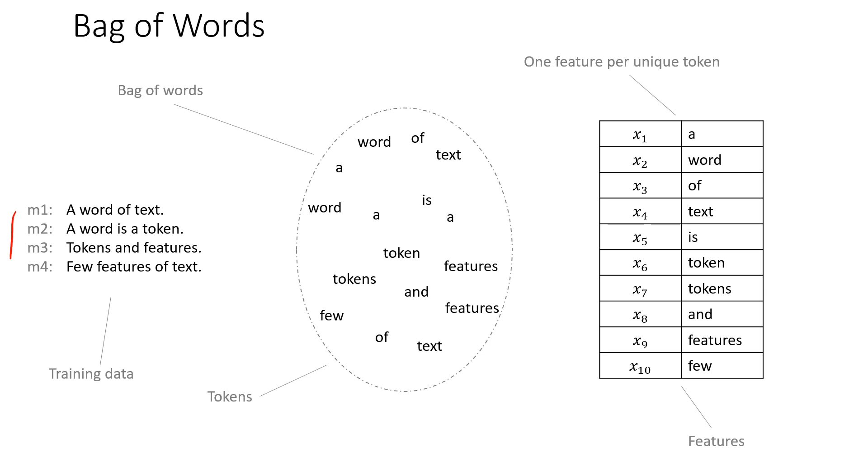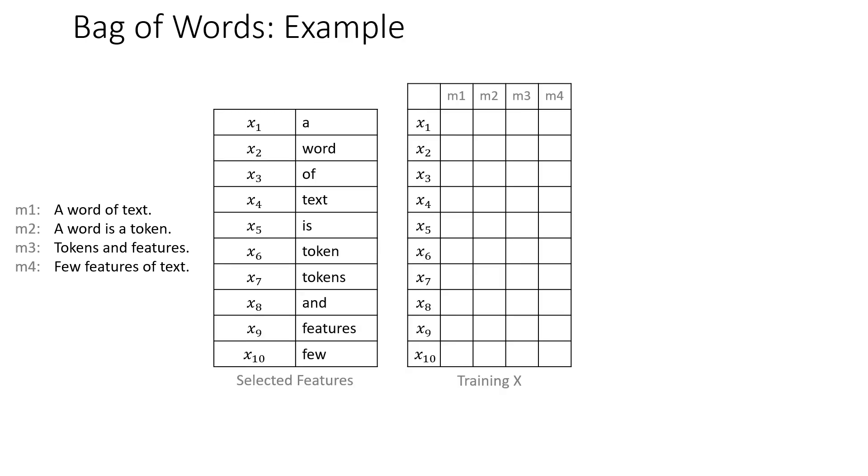So now what do you do with this? So you have the original training data that we started with, you have the features that we selected using the bag of words technique. And then we want to produce the training vector. And as I said, you just fill in the ones and zeros. So each message has a one for each word that it has. There you go, perfect and beautiful.